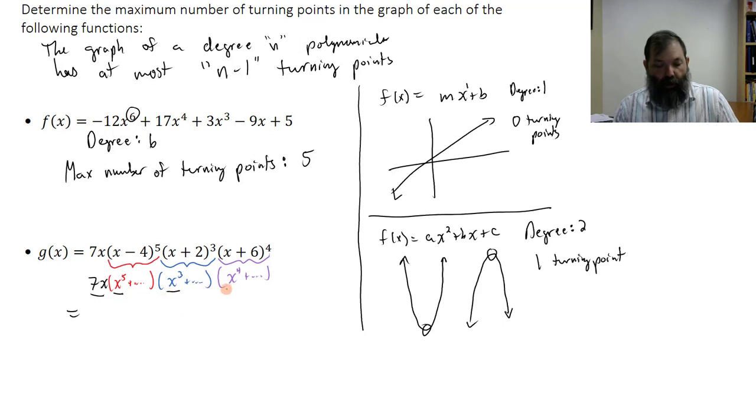times an x^3, times an x^4. And if we recall our rules for exponents, my lead term would be a 7x to the 1, plus 5, plus 3, plus 4, x to the 12th. And then, sorry, 13.